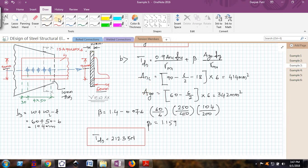Here you can see that I am finding the ANC, the net area of the connected leg. Since the 90 mm leg is the connected leg, it is 90 minus 6 by 2 (half the thickness) minus 18 mm bolt diameter multiplied by the thickness of the angle. I am getting 414 mm square as the net area of the connected leg.